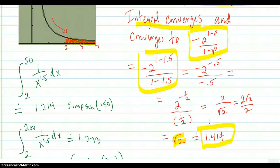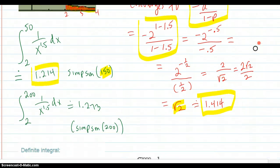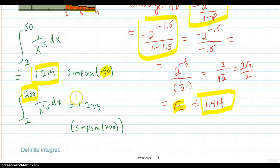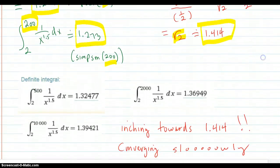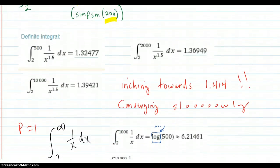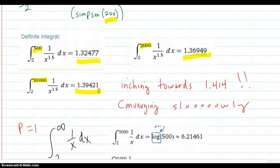I put this into the calculator. Now 150 is not that good of a number for that wide of an interval, but we got 1.214 — sort of close to 1.414. Cranking it up to 200 gets us to 1.27, getting a little closer. I used Simpson's rule with 200 intervals, but my calculator's integral method was going to take too long, so I used Wolfram Alpha. For b equal to 500, it's this value; for 2,000, it's this; and at 10,000, it's 1.3942, inching toward 1.414 like it's supposed to. So it's converging, but slowly.